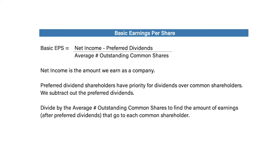The basic earnings per share formula is net income minus preferred dividends, divided by the average number of outstanding common shares. Net income is the amount we earn as a company, and preferred dividend shareholders have priority for dividends over common shareholders. So we subtract out the preferred dividends because EPS is focused on how much in earnings is available to common shareholders. We divide by the average number of outstanding common shares to find the amount of earnings per common shareholder.